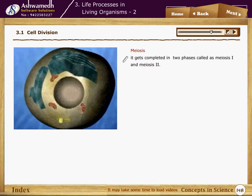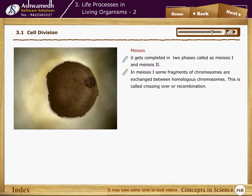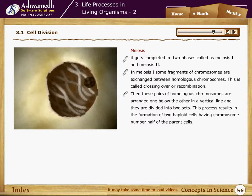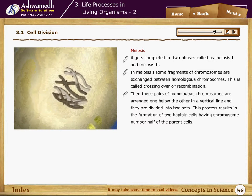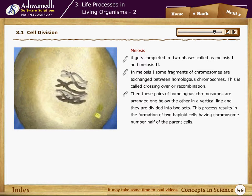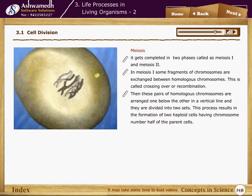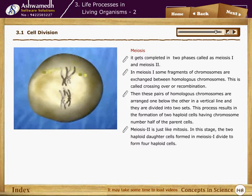Meiosis is completed in two phases: meiosis one and meiosis two. In meiosis one, some fragments of chromosomes are exchanged between homologous chromosomes — this is called crossing over or recombination. Then these pairs of homologous chromosomes are arranged and divided into two sets, resulting in the formation of two haploid cells having a chromosome number half of the parent cell.